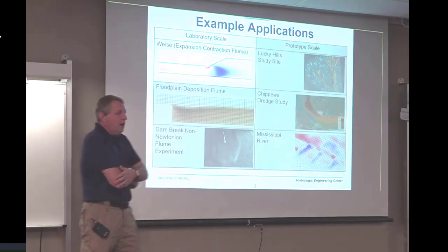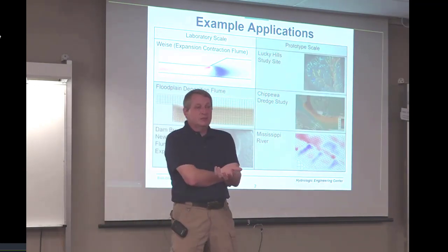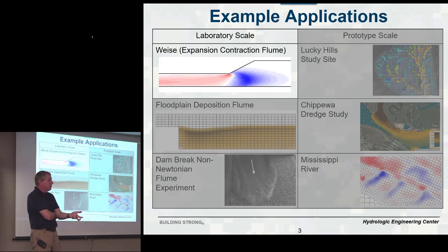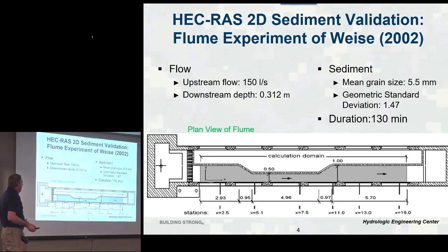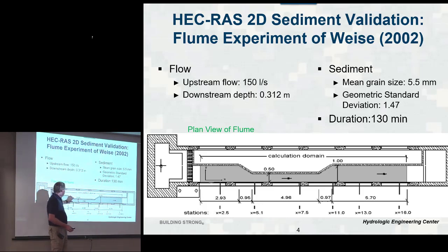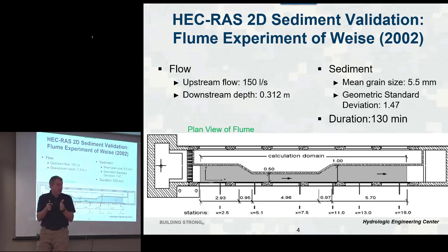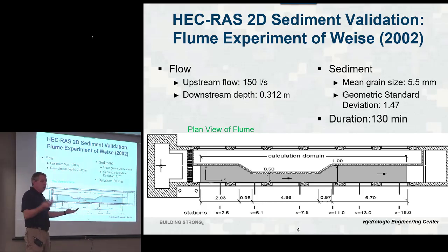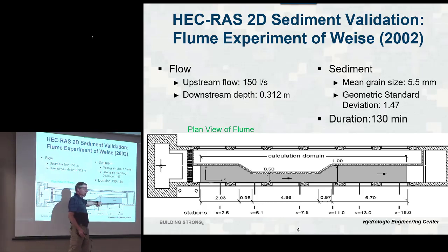The first is the Weiss flume experiment. This is actually going to be your workshop — you're going to build this model this afternoon. It's a classic expansion-contraction flume. They have a flume with a run-up, then it contracts, runs fast and narrow for a while, and then expands. So what's the hypothesis? You're going to get scour through the contraction, and then it gives the sediment back during the expansion.